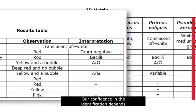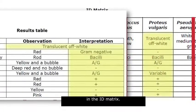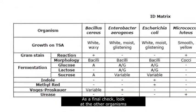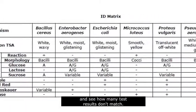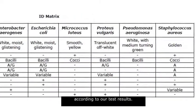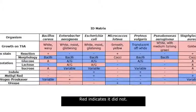Our confidence in the identification depends on how many test results match the characteristic results in the ID matrix. Typically, they all match for a single organism. This is a good sign your identification is correct. As a final check, look at the other organisms and see how many test results don't match. We'll do this by highlighting the ID matrix with blue and red according to our test results. Blue indicates that our test matched that result; red indicates it did not.